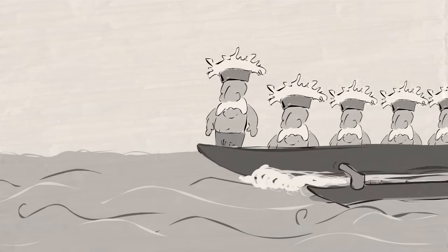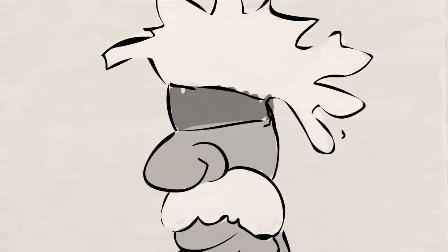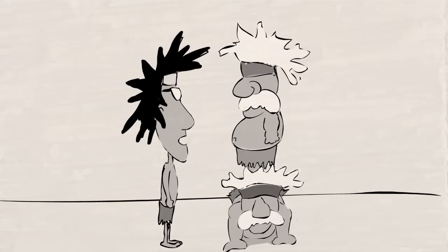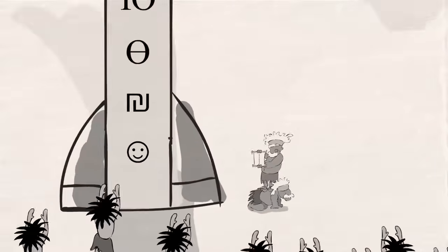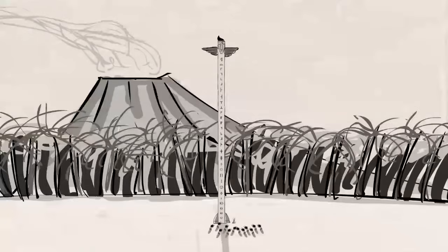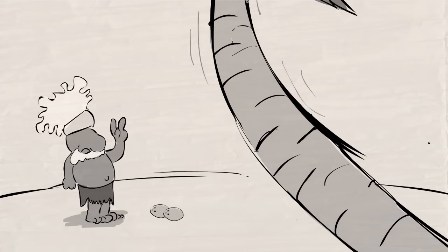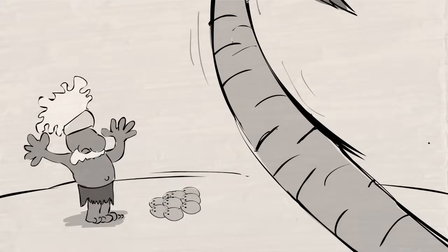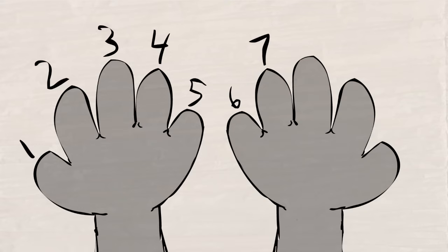Then one day, a boat arrived from the distant island of Bungo Pungo. The Bungo Punganians had invented a much better system which could represent really big numbers with far fewer symbols. Apparently, in the early prehistory of Bungo Pungo, they must have counted on their fingers because they only used ten different symbols: one, two, three, four, five, six, seven, eight, nine, and zero — which they called fingers or digits.